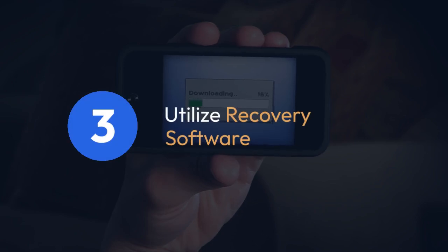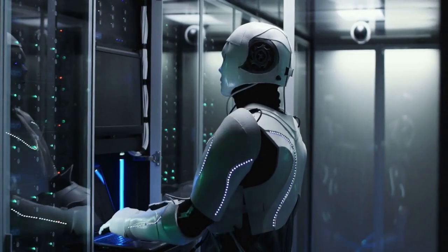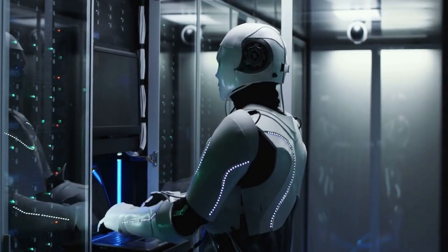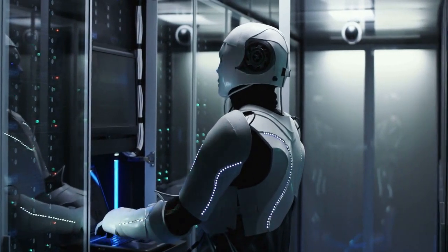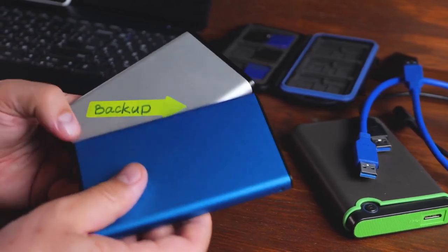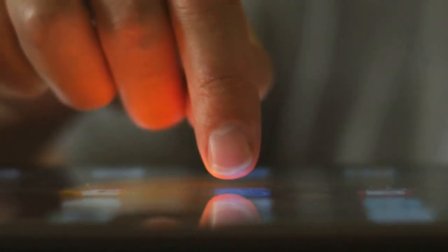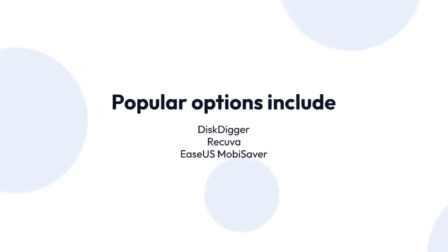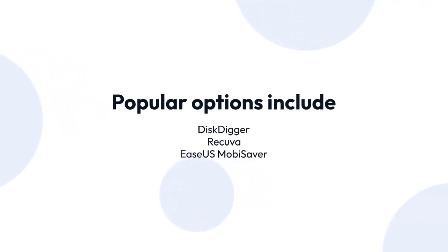Method 3: Utilize recovery software. Several Android data recovery apps are available on the Google Play Store. These apps scan your phone's storage for deleted files and attempt to recover them. Be cautious when choosing an app — read reviews carefully and only download from reputable sources. Some popular options include DiskDigger, Recuva (if it supports Android), or EaseUS MobiSaver for Android.